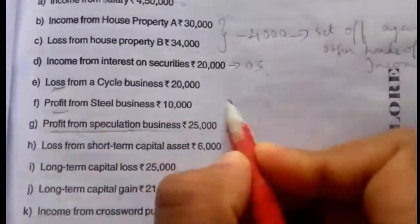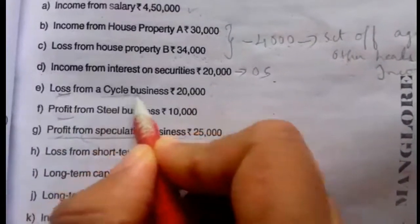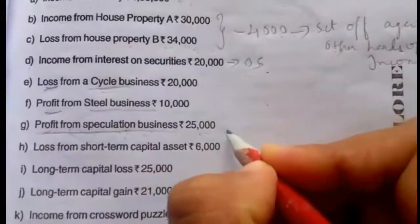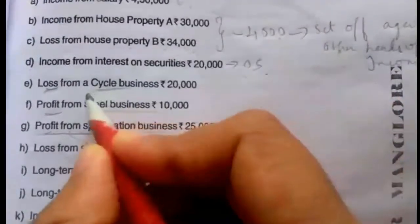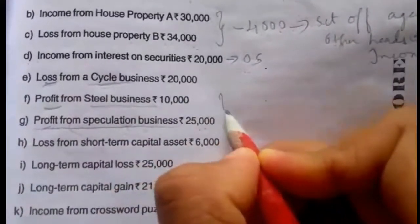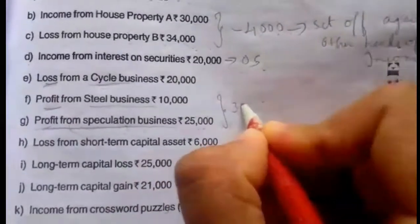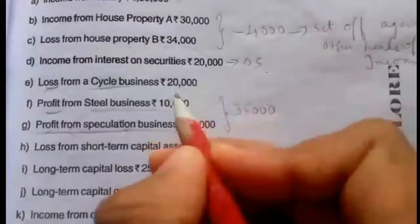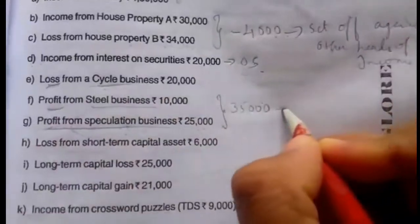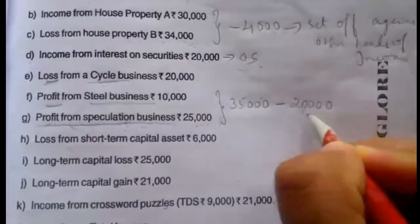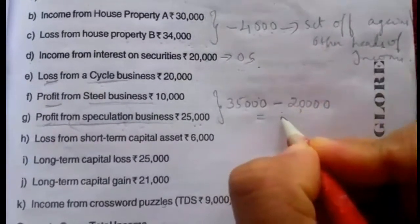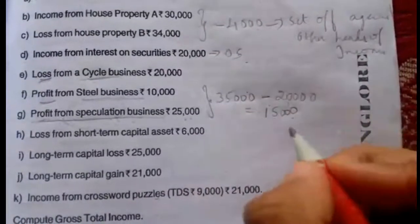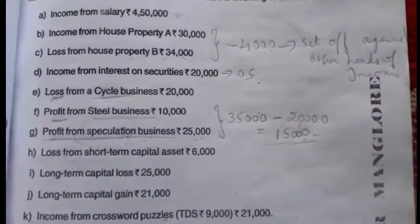Since there is no speculative loss, the profit of Rs. 25,000 can be utilized to set off other losses. The loss from cycle business is a non-speculative business loss. Steel business is also non-speculative. Total business income is Rs. 25,000 plus Rs. 10,000 equals Rs. 35,000. This Rs. 35,000 income is used to set off the loss from cycle business of Rs. 20,000. Balance is Rs. 15,000 taxable business income.